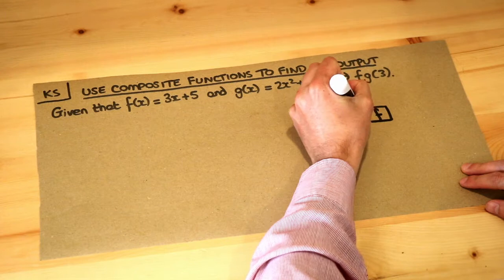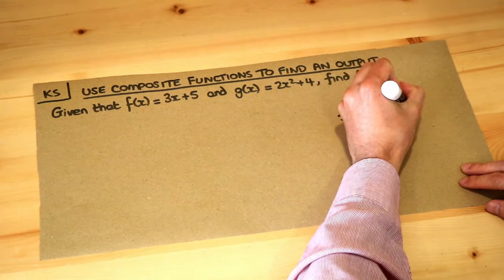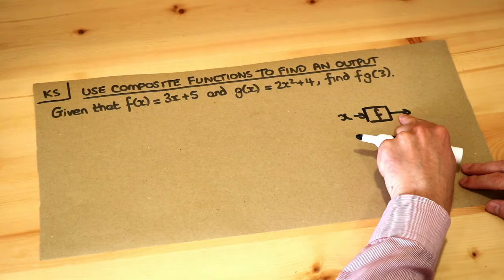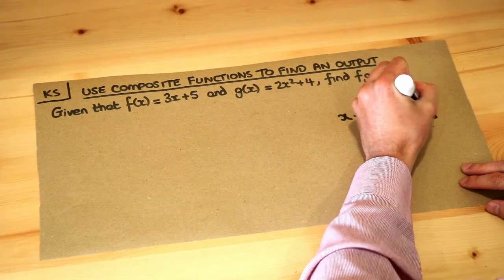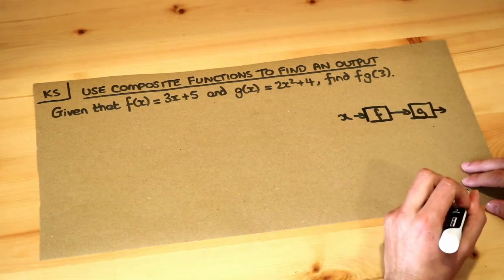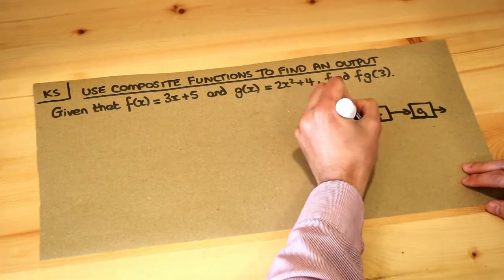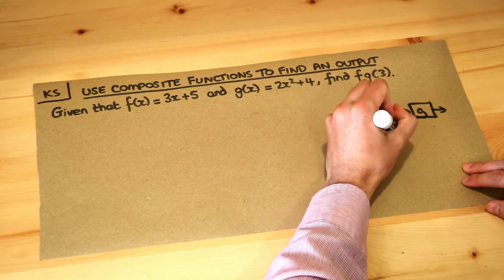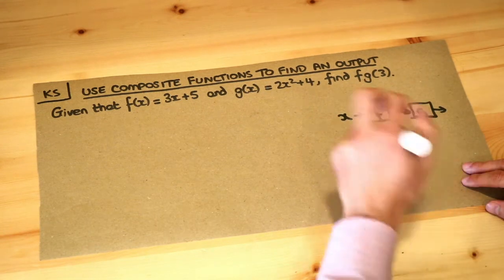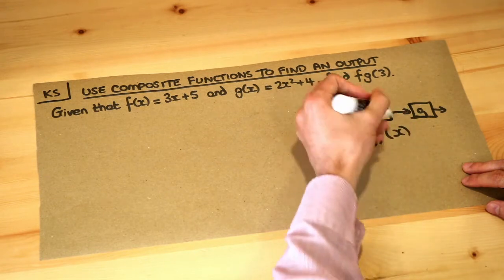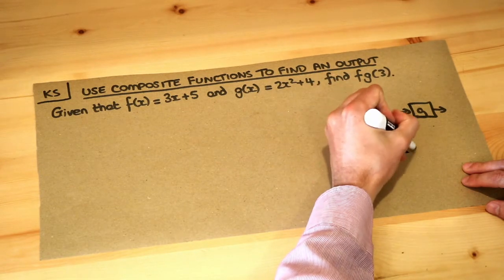So let's just say that I had an input x. I could feed that through one function and then whatever the output of that function is, I can then feed that as the input to another function to get some new output. And the way we'd write this is as gf(x). You put the functions in reverse order, and the reason is that gf(x) means g of f of x.